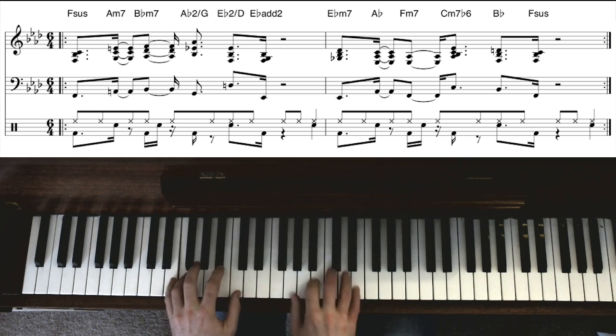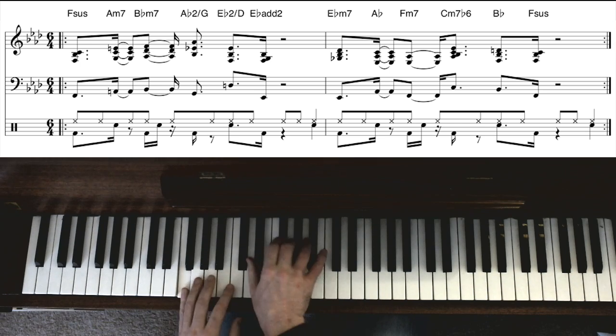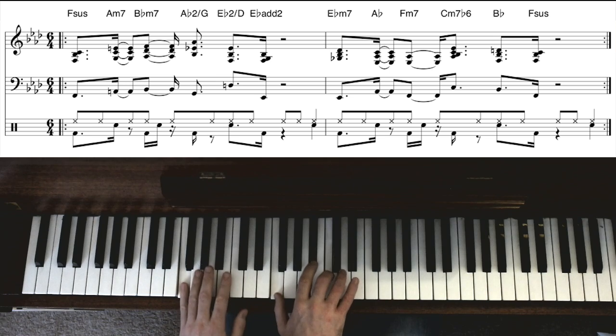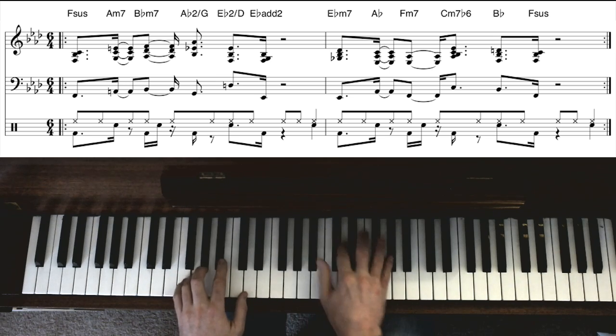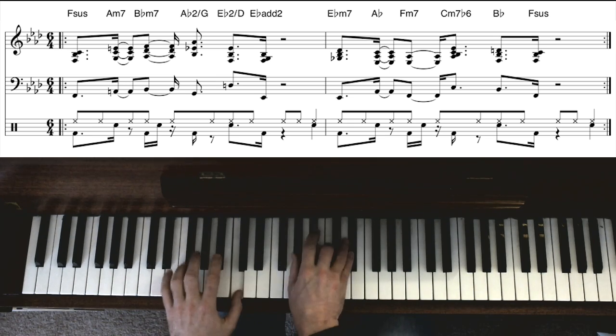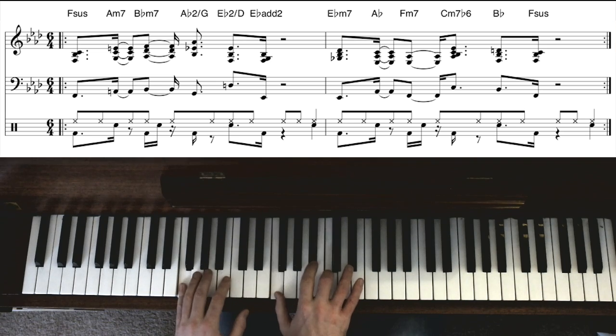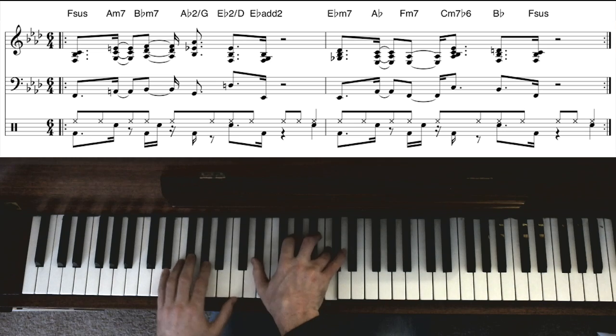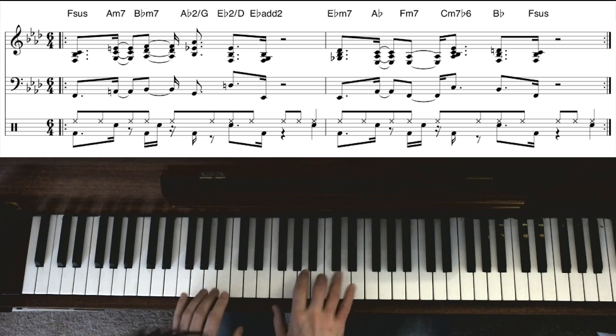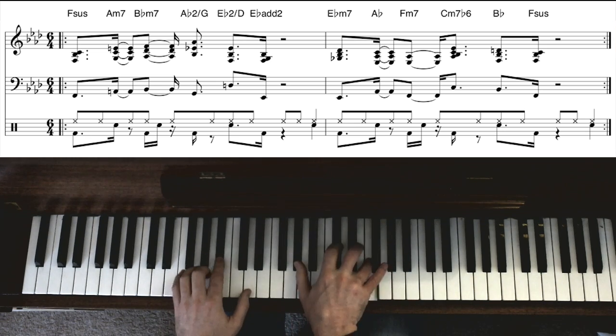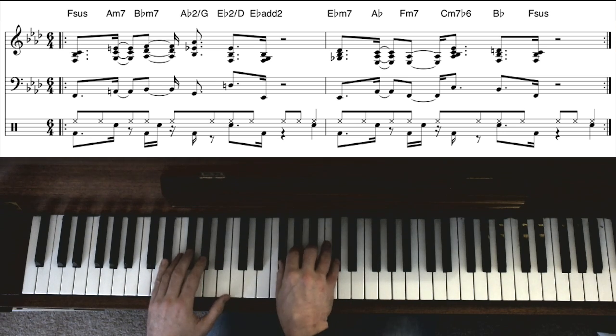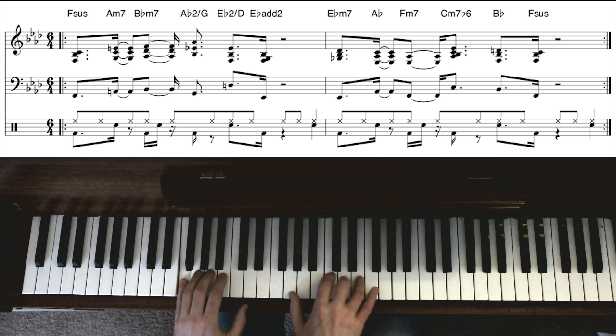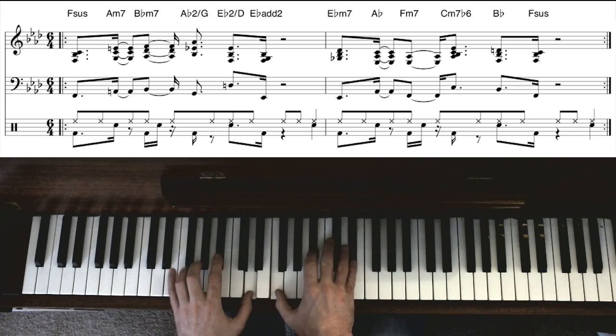And then the final step that I took with this was to take the implied feel of this section, 2, 3, 4, and make that the actual pulse. And turn it into 6/4: 5, 6, 1, 2, 3, 4, 5, 6. So this is the first time the length of the measures has actually changed throughout the whole piece. So it's all kind of been elongated, but even though the subdivisions are the same as before.